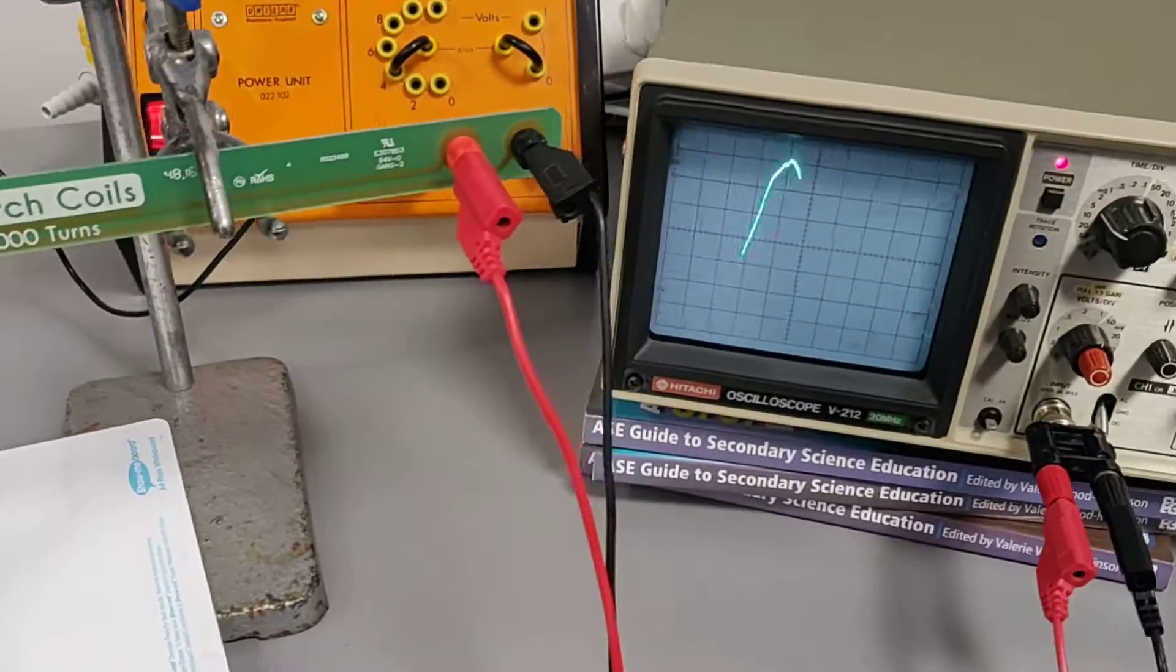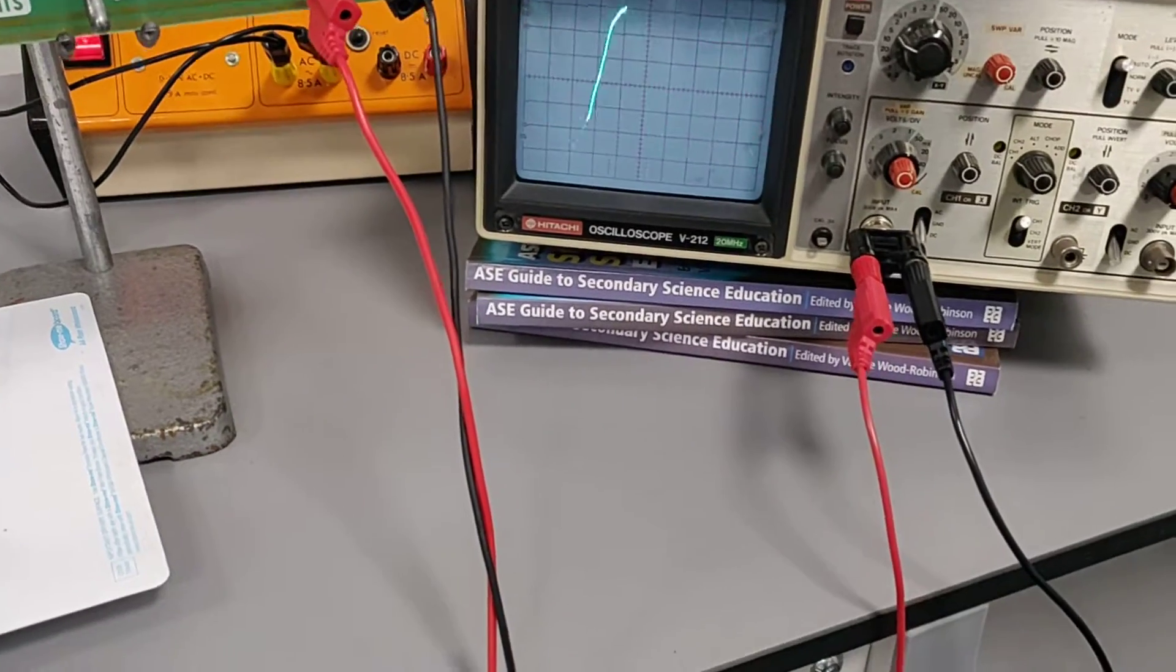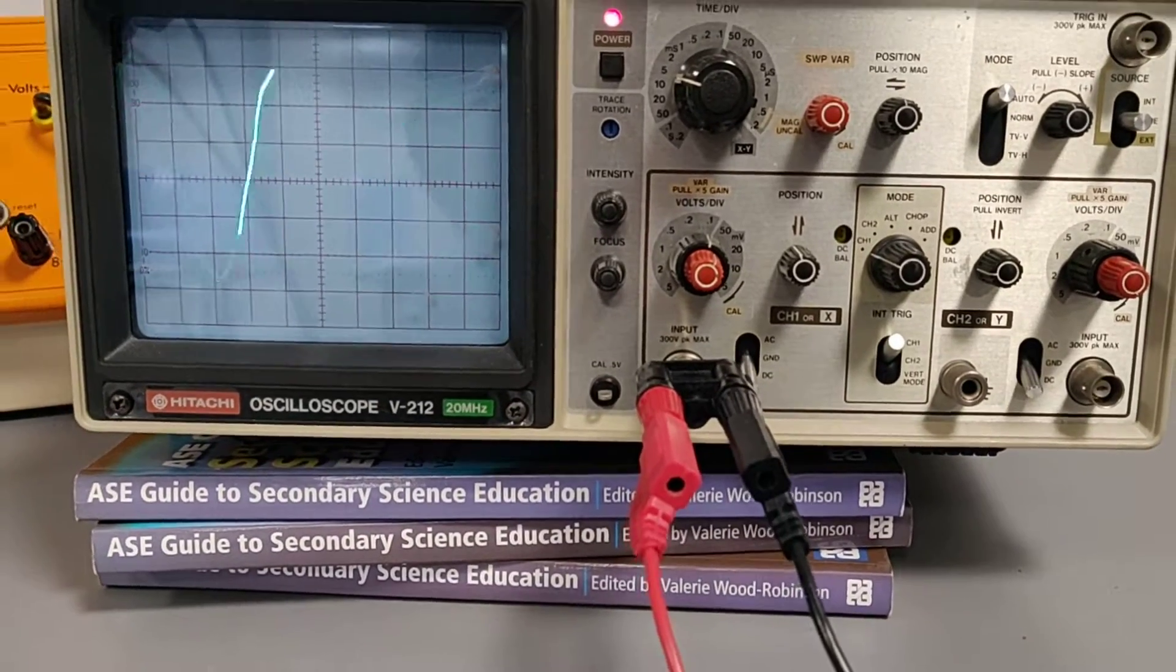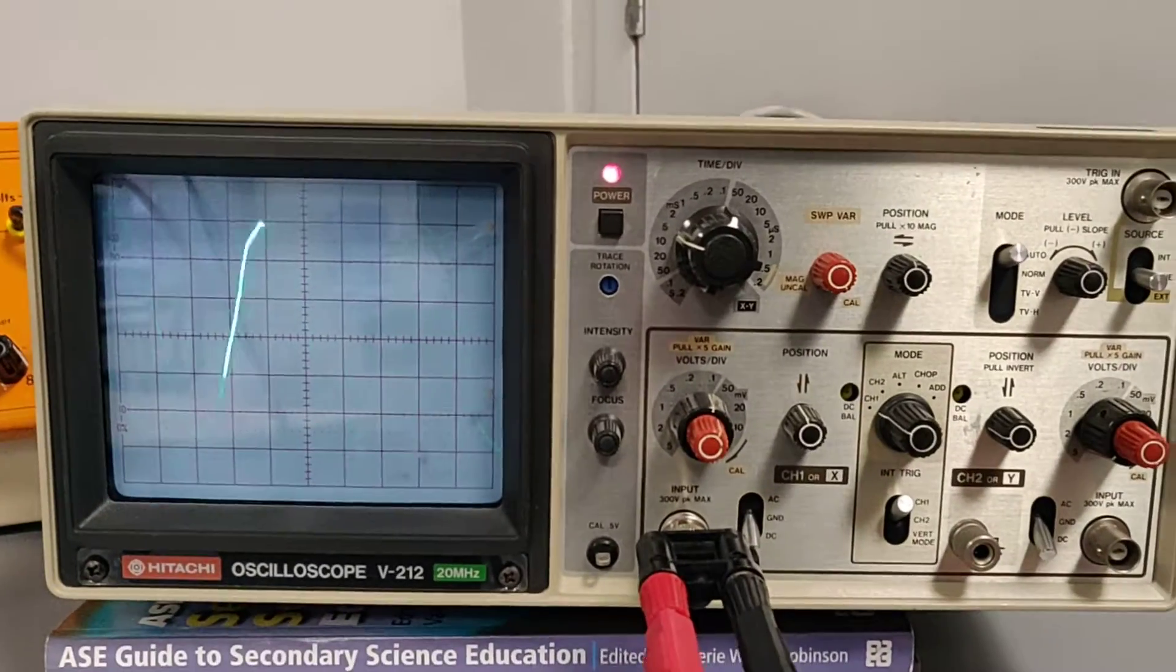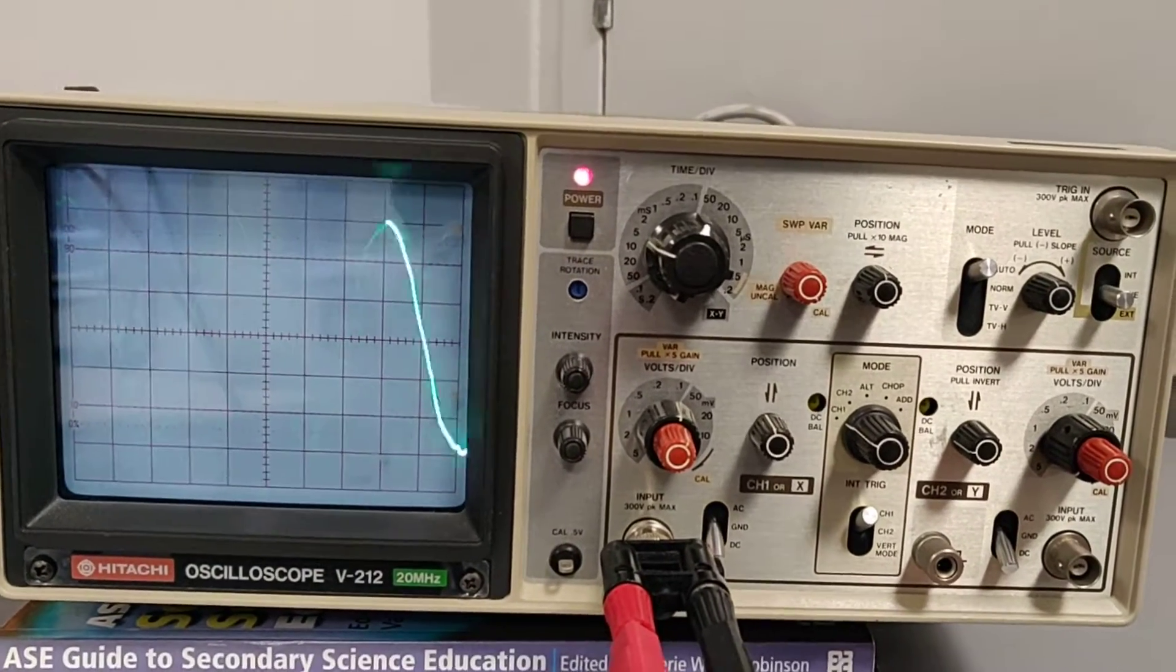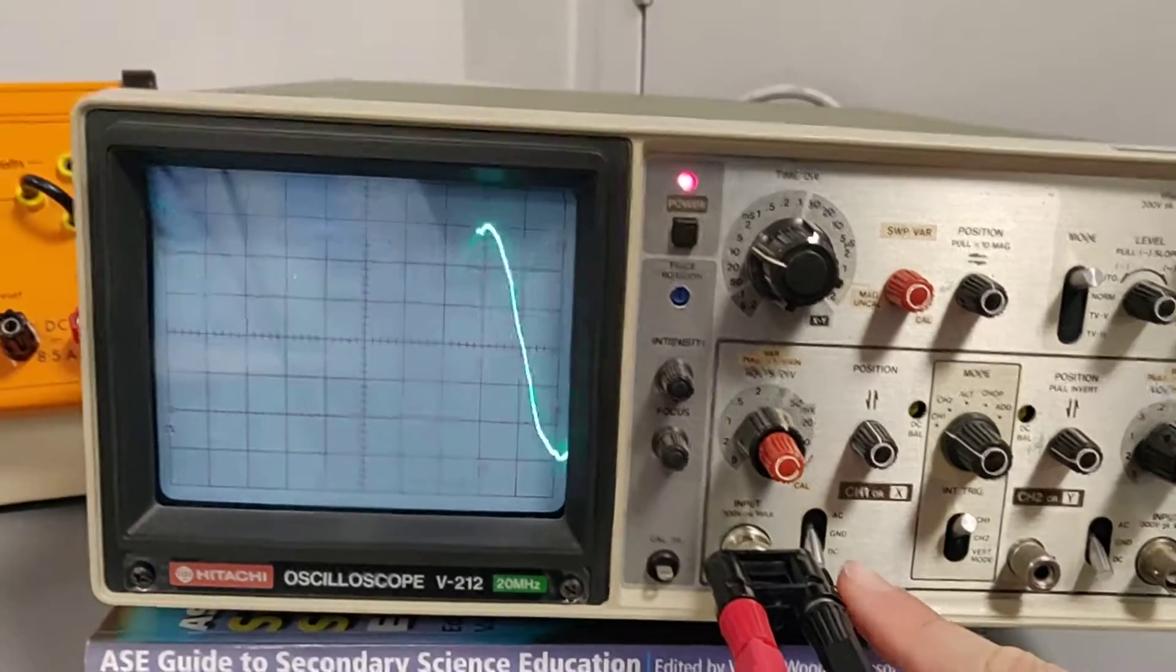And if I go over to the oscilloscope here, you can see the trace. It's a bit awkward because of the video refresh rate. But if I do zoom in, you can see the controls on the oscilloscope all set up. With this current setup, it won't be exactly the same for every setup.